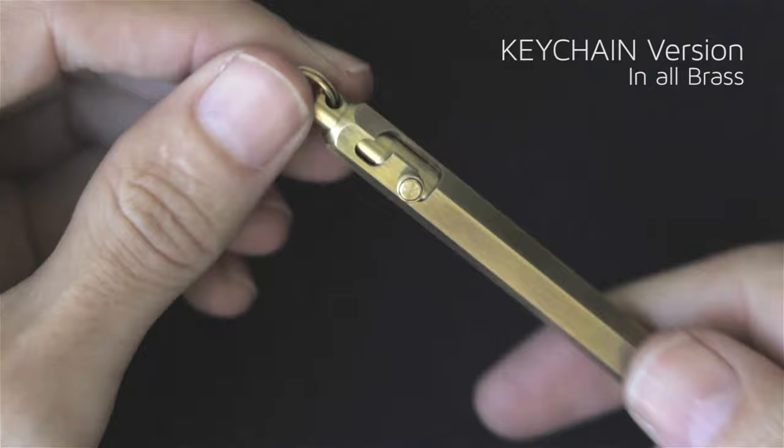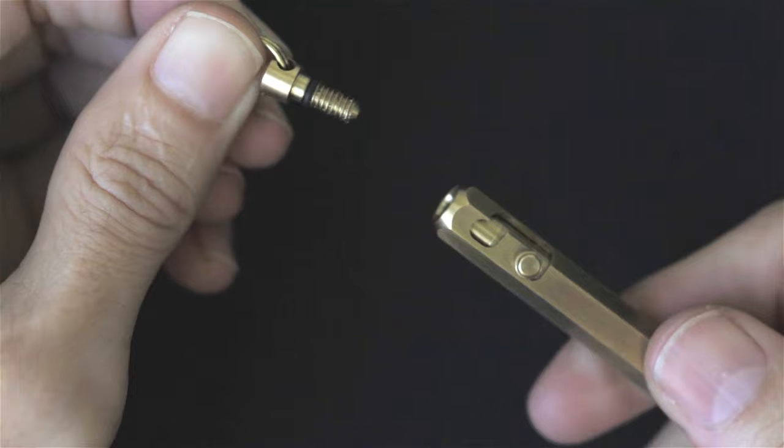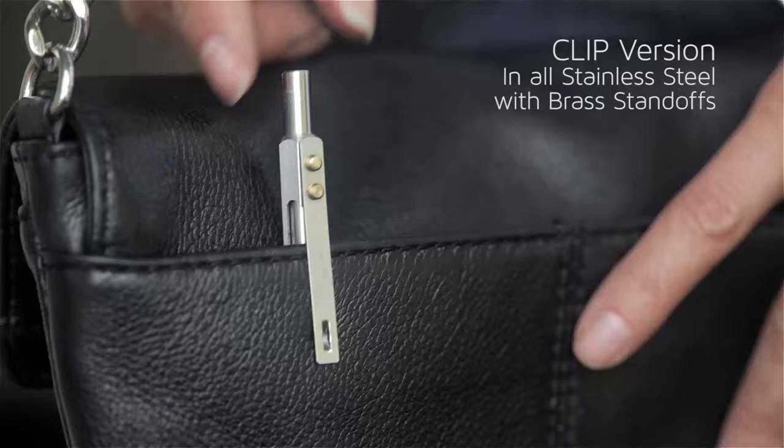Second is the keychain version that is the same as the pocket version but adds an integrated split ring and simple screw feature that allows you to attach the pen to your keyring or bag, then easily remove it. This way you will always know where to find your pen.